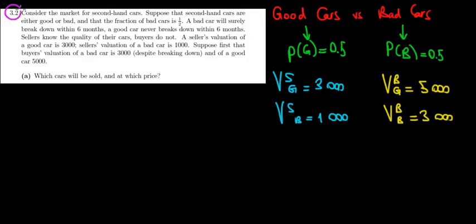Let's start solving question 3.2. We have a market for second-hand cars that are either good or bad. The fraction of bad cars is a half. A bad car will break down in six months, a good car never breaks down in six months.